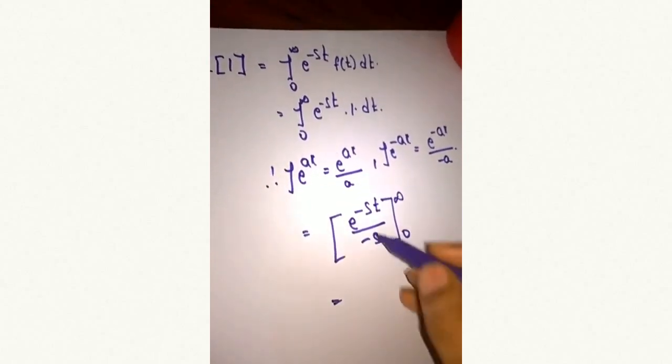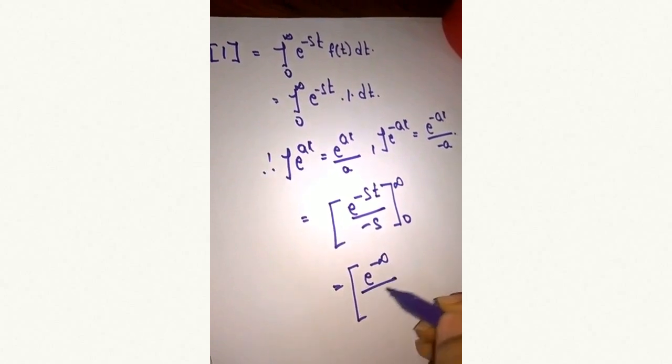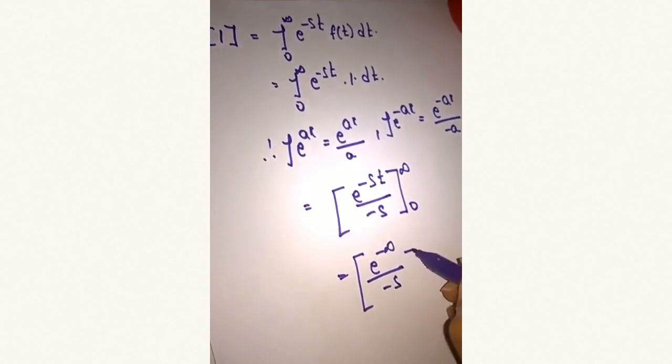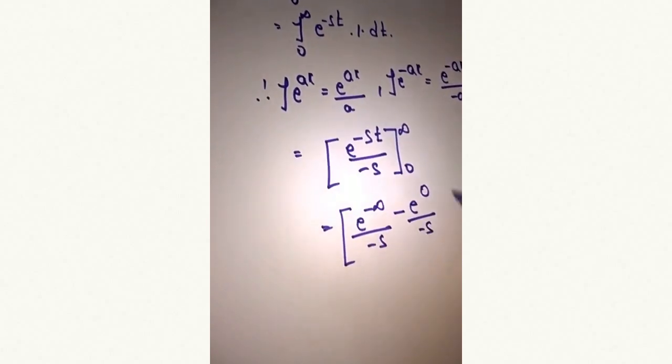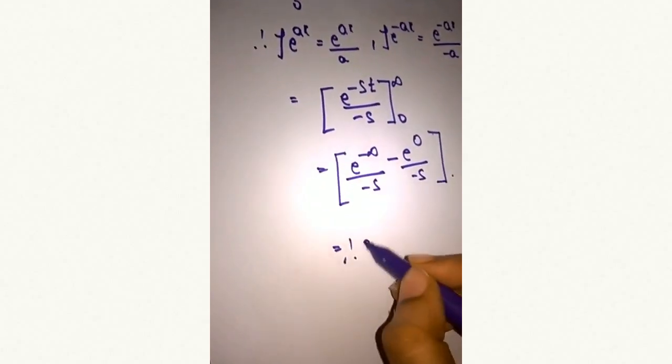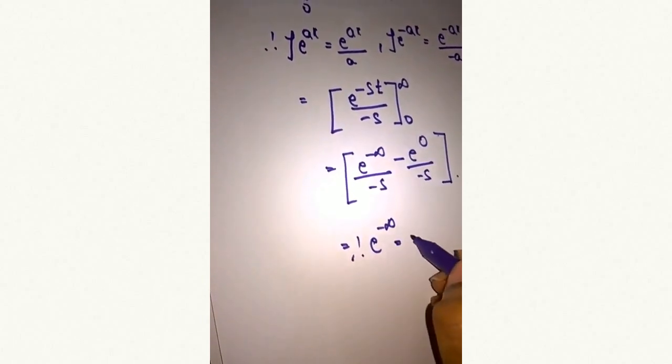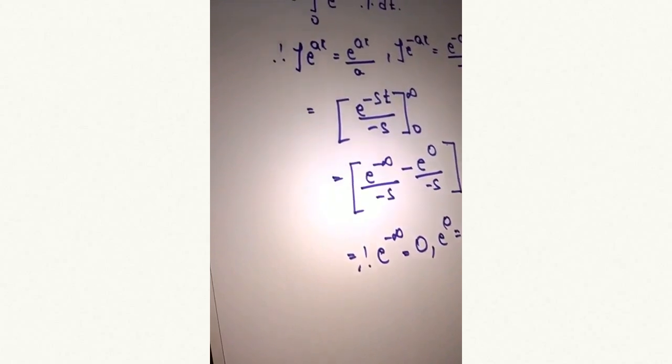Let us substitute the limits: e power minus infinity over minus s, minus e power 0 over minus s. e power minus infinity equals 0, and e power 0 equals 1.